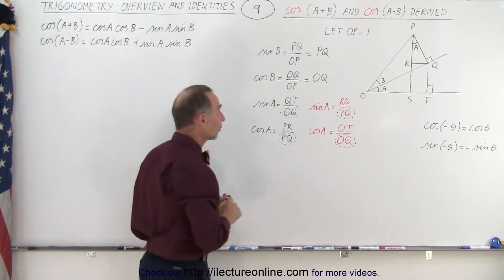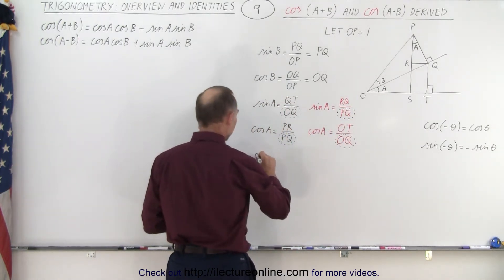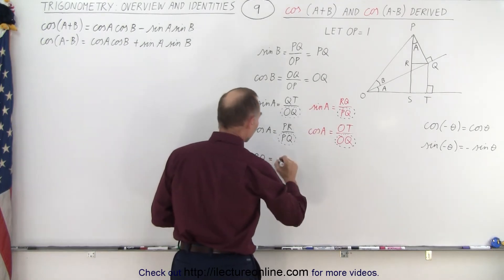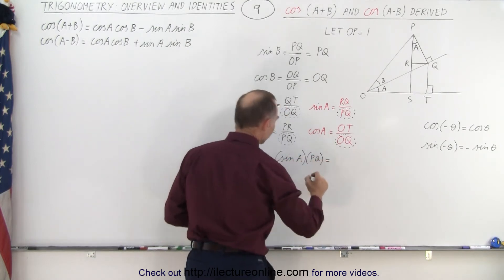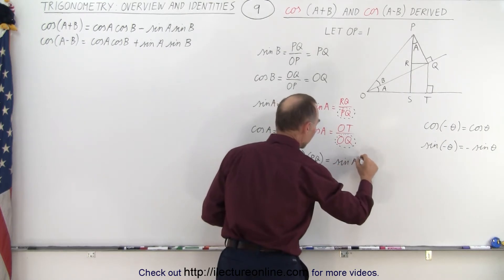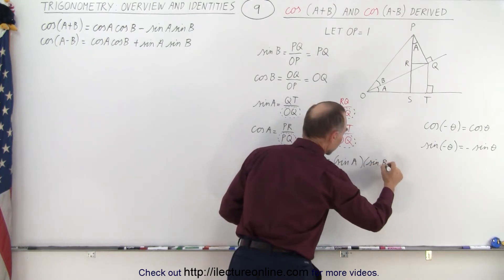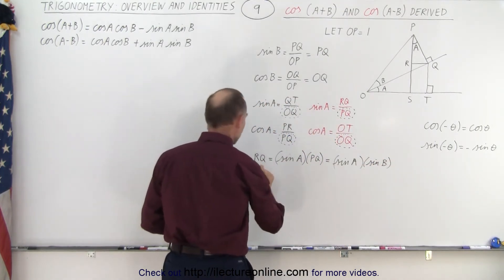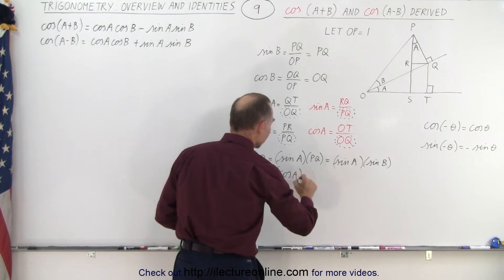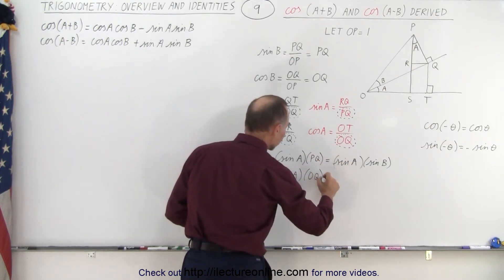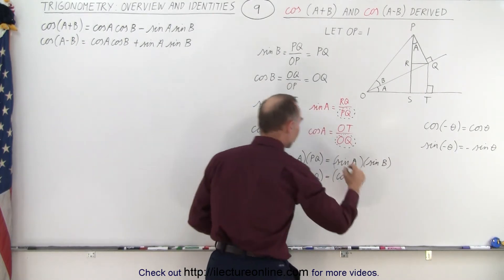Now we're going to define RQ and OT. We can say that RQ is equal to the sine of A times PQ, which can be written as sine A times sine B. And OT is equal to the cosine of A times OQ, which is equal to cosine A times cosine B.